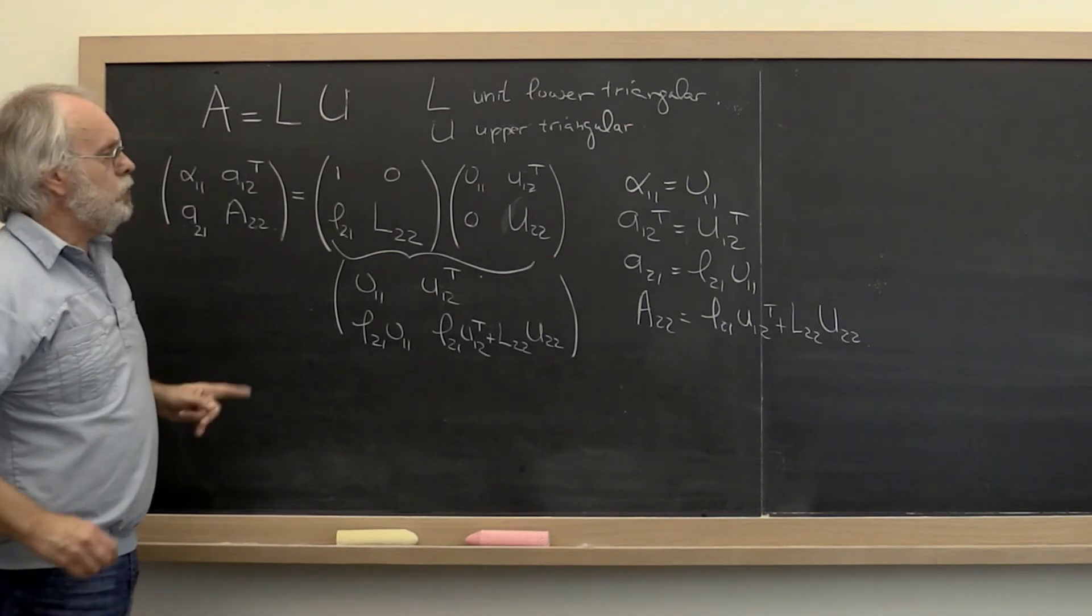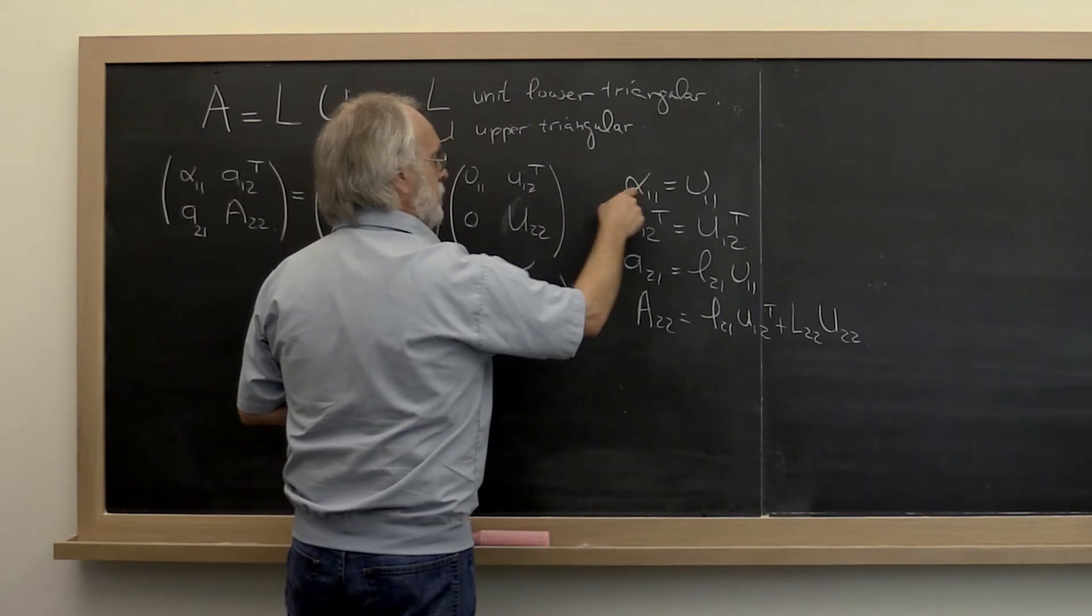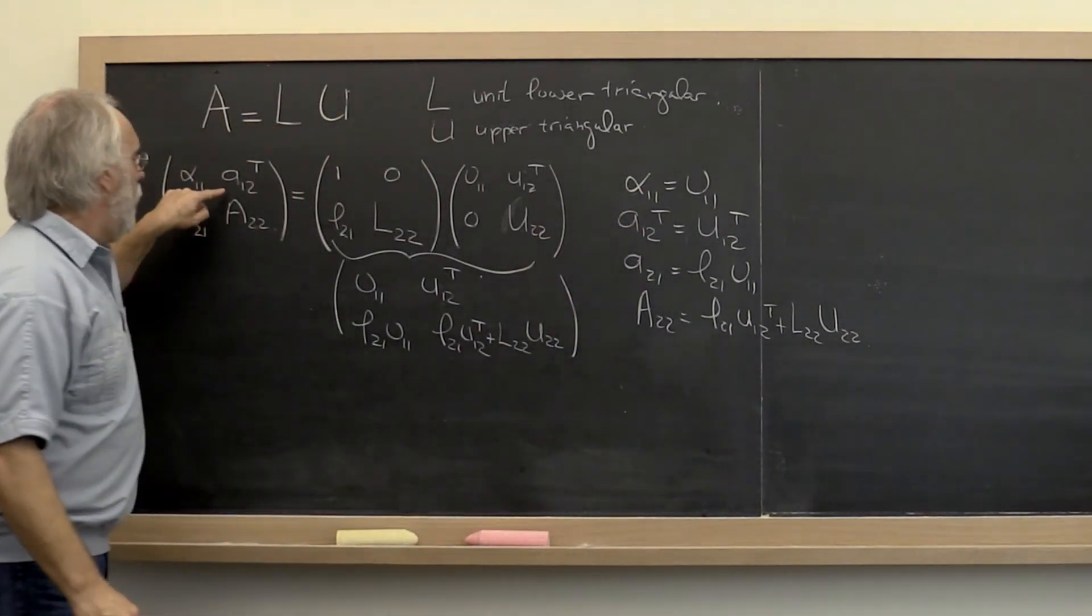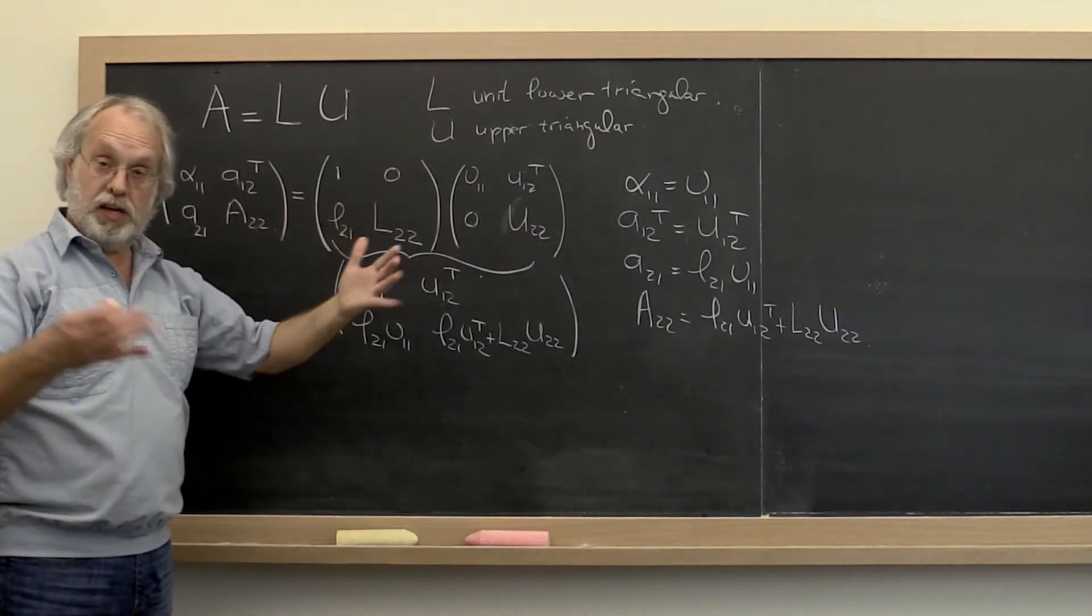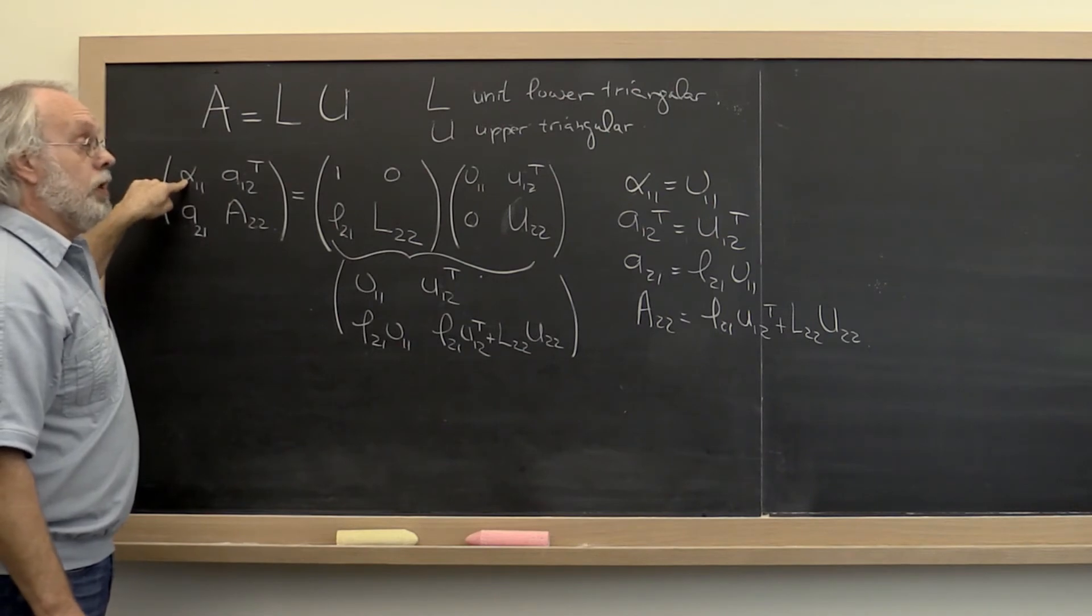So what do we conclude? We conclude that upsilon 1 1 is just equal to alpha 1 1. And if we are going to overwrite A with L and U as we have done before, then it means you can leave alpha 1 1 alone.